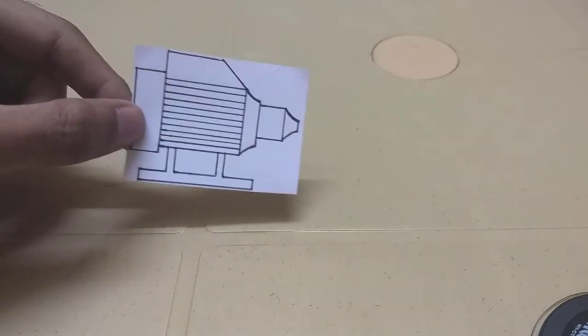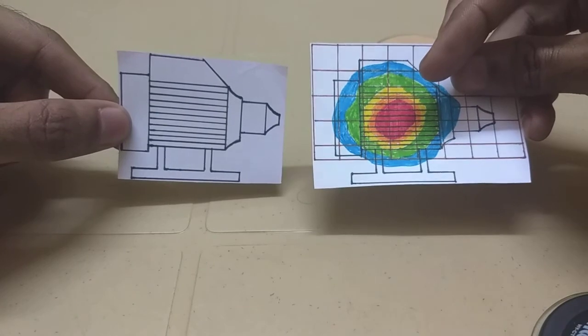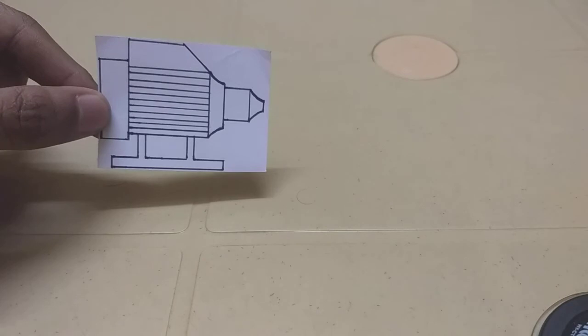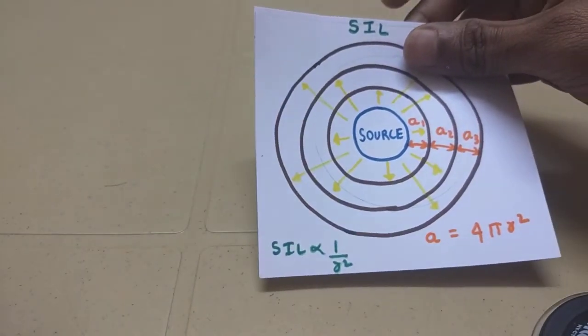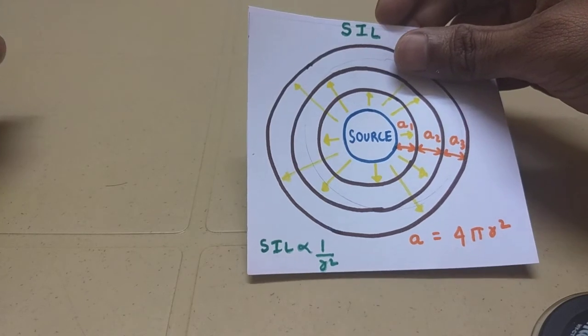Whereas sound intensity will change. It may be concentrated at one point and it may die down slowly. It obeys the inverse square law where the intensity decreases. It's inversely proportional to the square of the distance.